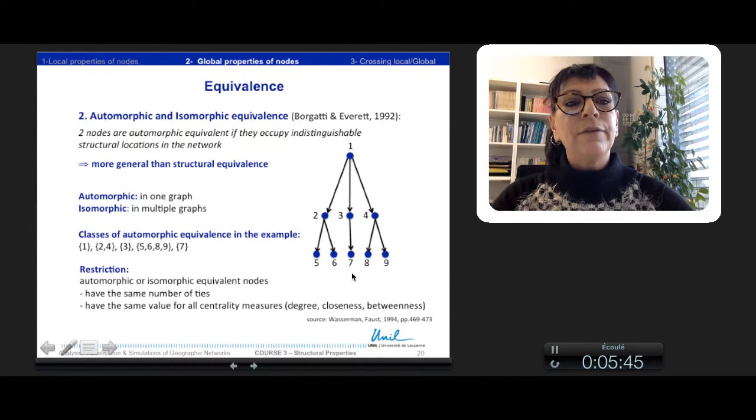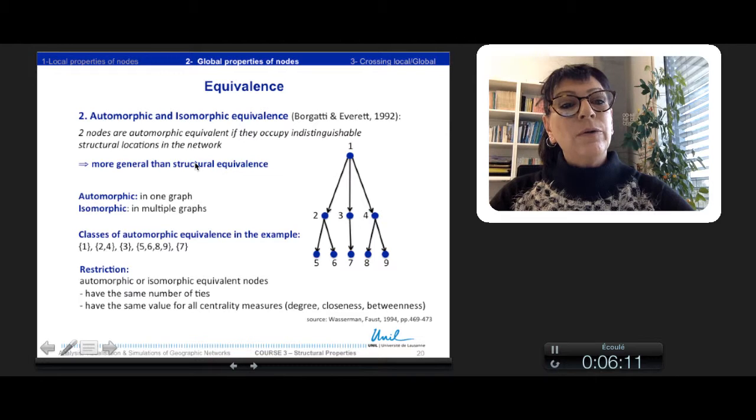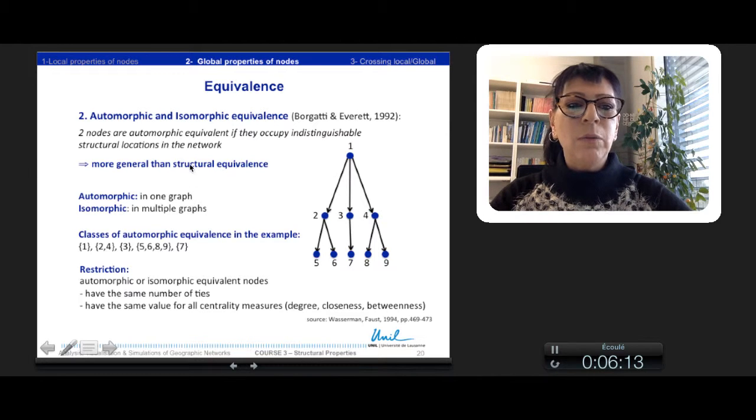The second kind of equivalence is less restrictive. And two nodes are automorphic equivalent if they occupy the same structural location in the network, but not necessarily with the same nodes. We speak about automorphic when it is in one graph, isomorphic when it is in multiple graphs. So this automorphic isomorphic equivalence is more general than structural equivalence.